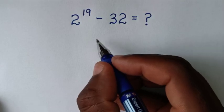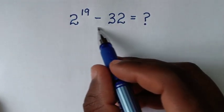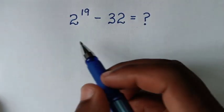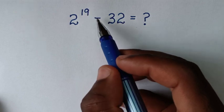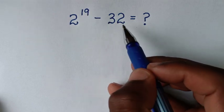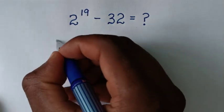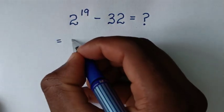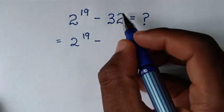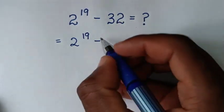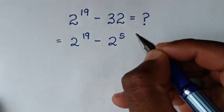Hello, you are welcome to solve this math problem which is 2 power of 19 minus 32. So it will be equal to 2 power of 19 minus 32, and as an exponent it is 2 power of 5.